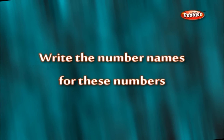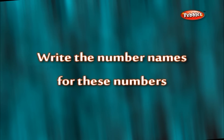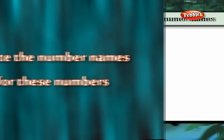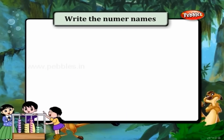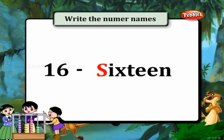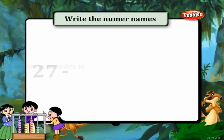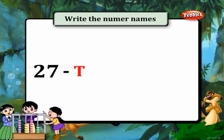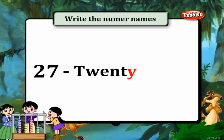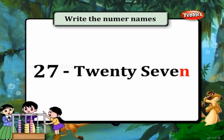Write the number names for these numbers. 16 — S-I-X-T-E-E-N. 27 — T-W-E-N-T-Y S-E-V-E-N.